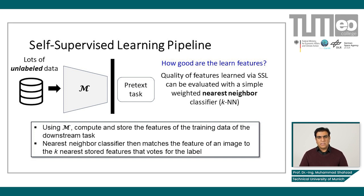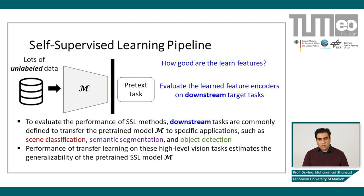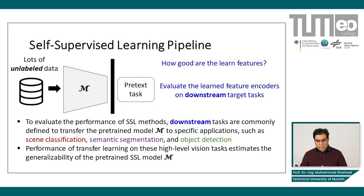But in practice, there are also two other very commonly used methods which have been adopted to evaluate the performance of SSL models. For this, I will also introduce the downstream task. We generally define some downstream tasks — for example, a downstream application could be a segmentation step or object detection from a classification-trained model. The performance of transfer learning on these high-level vision tasks estimates the generalizability of the pre-trained SSL model.